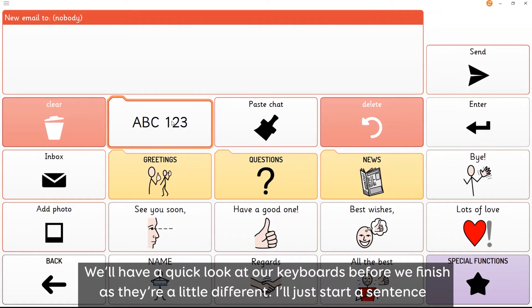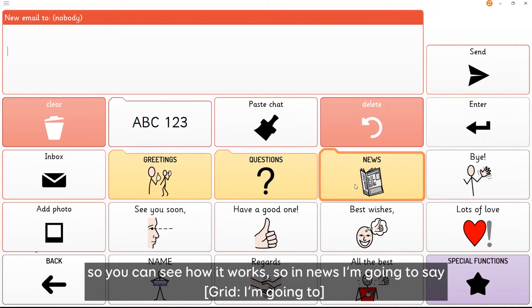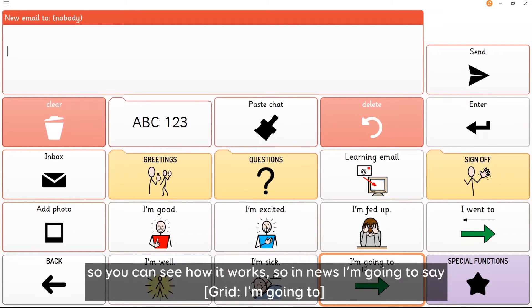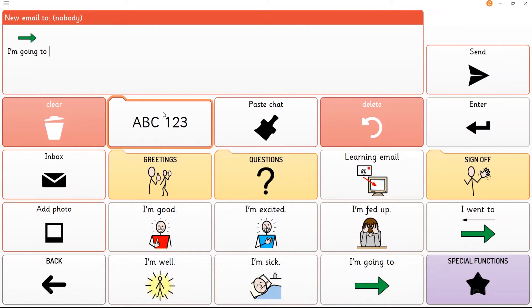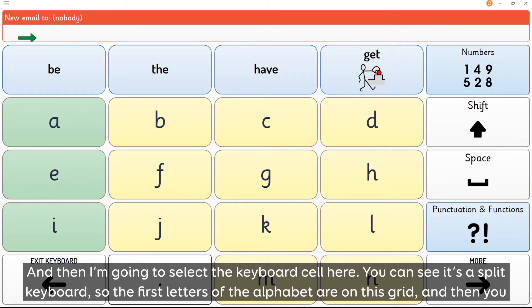We'll have a quick look at our keyboards before we finish as they're a little different. I'll just start a sentence so you can see how it works. So in news I'm going to say I'm going to. And then I'm going to select the keyboard cell here.